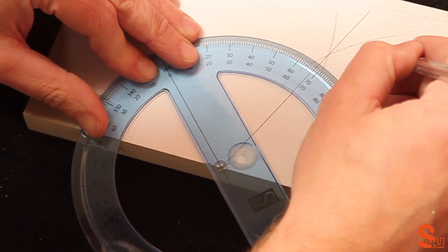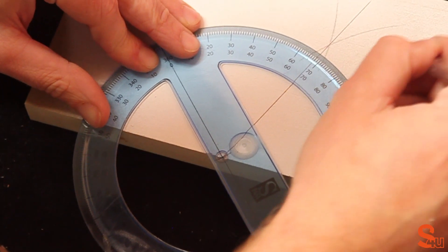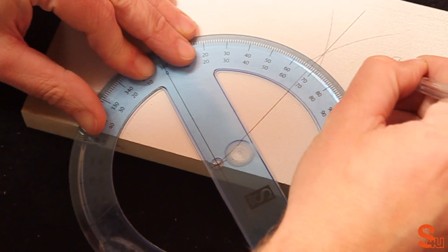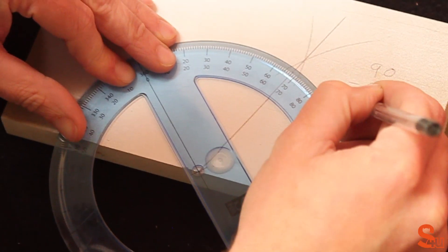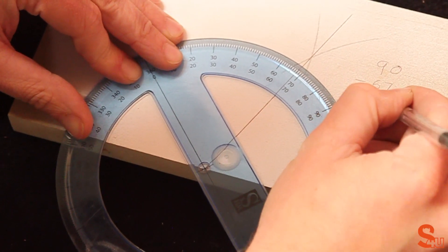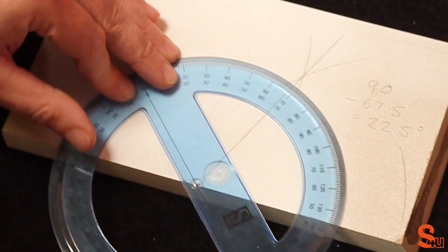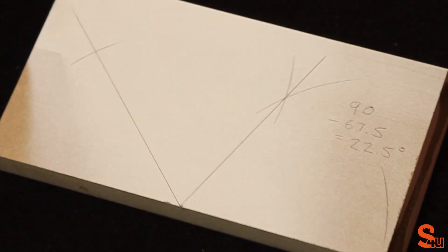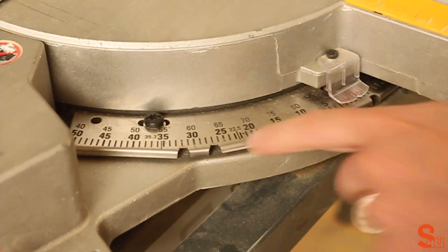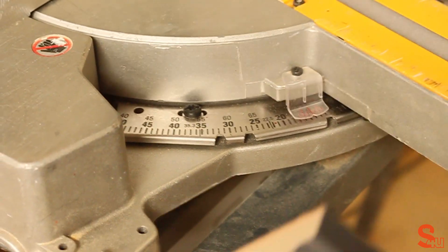To where the bisect line is and take it away. So in this case, 90 degrees minus 67.5 degrees gives us 22.5 degrees. That's what we need to cut at on our mitre saw.